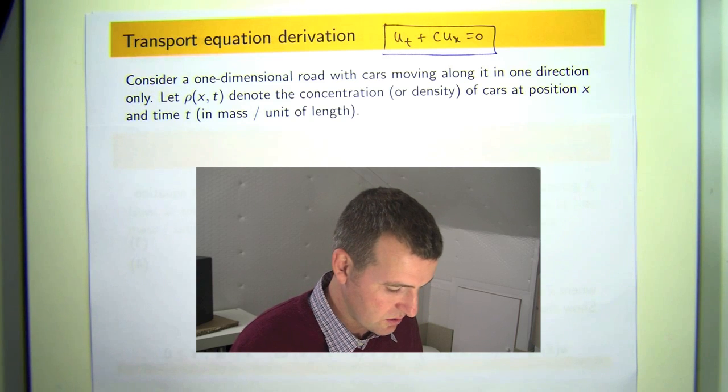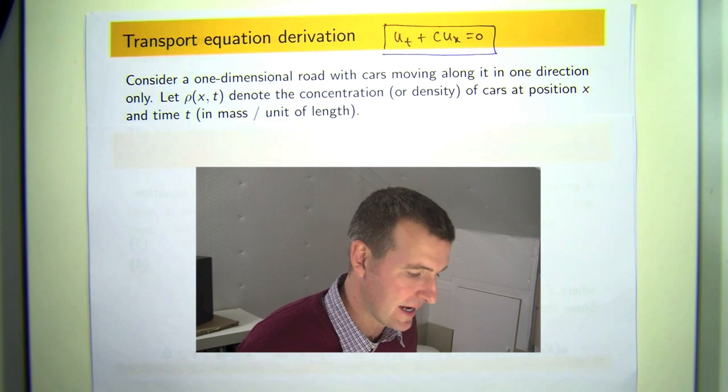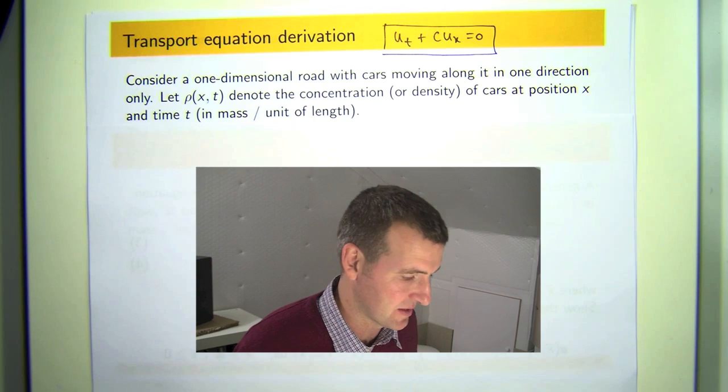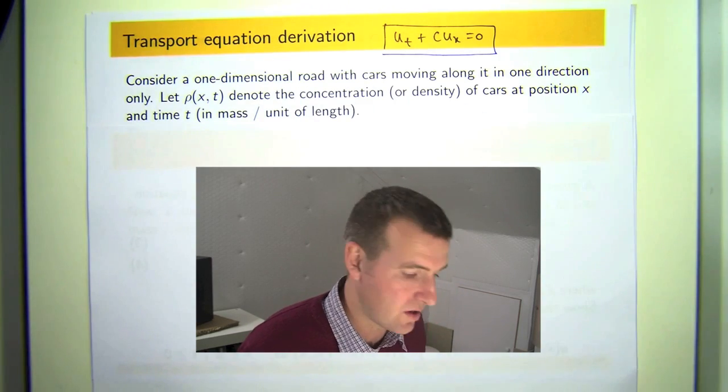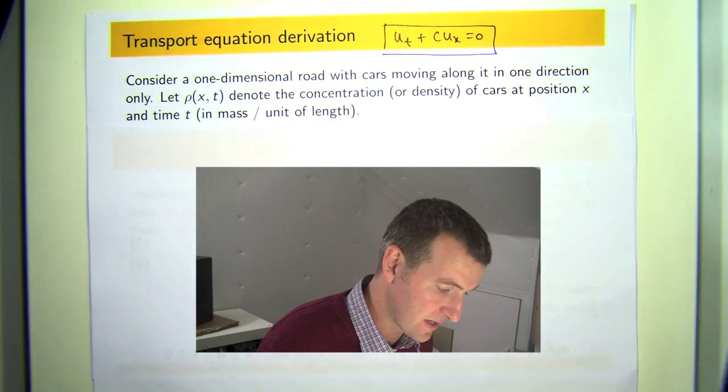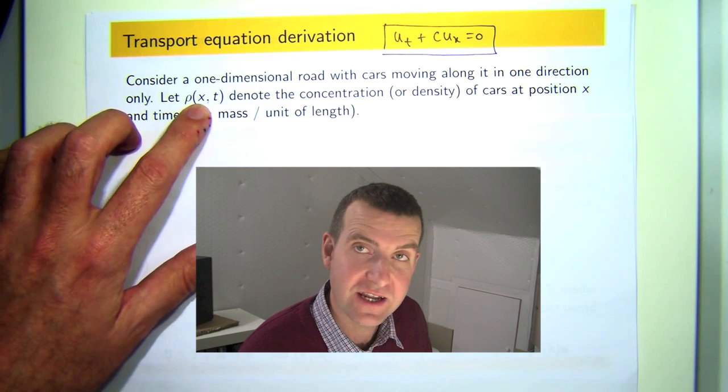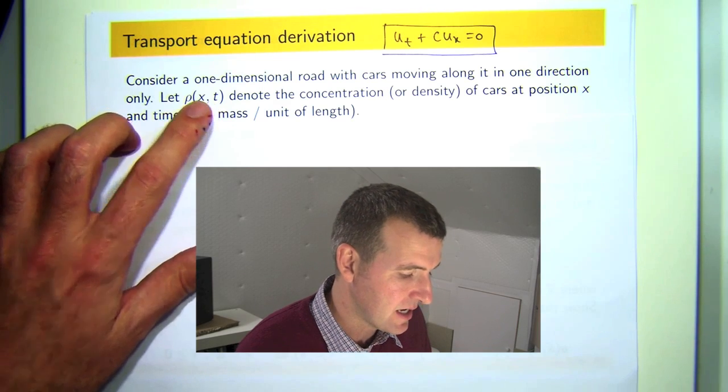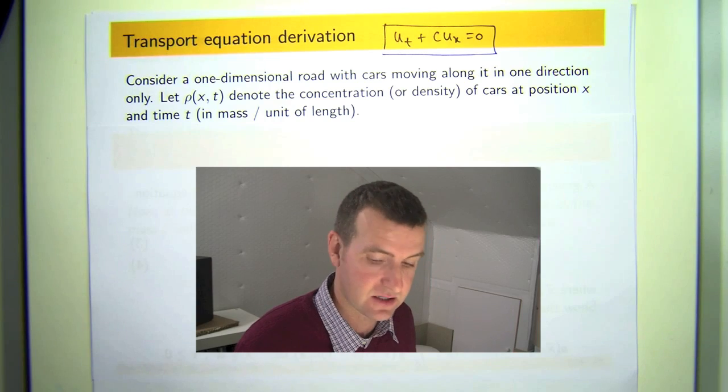Now I'm going to do it using cars moving along an infinitely long highway in one direction. So suppose we have a one dimensional road or highway with cars moving along in one direction only. Let rho be a function of position x and time t, denoting the concentration or density of cars at position x and time t.